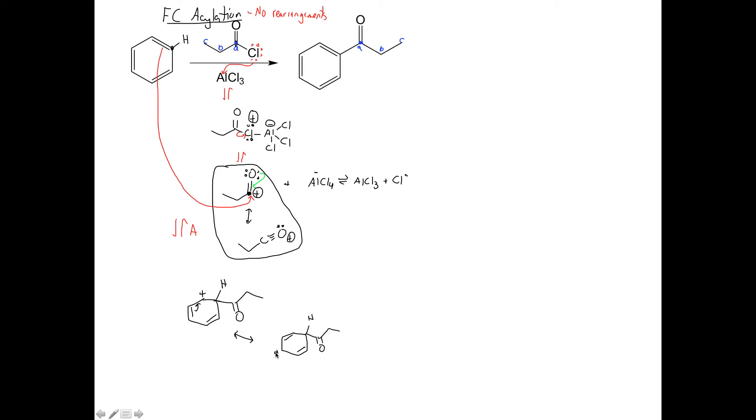And then I can draw another resonance structure where I move the other double bond over. And that gets us to this resonance structure, H C double bond O. We now have a positive charge on that carbon. Our double bond has moved there and moved there. So these resonance structures help stabilize this intermediate.